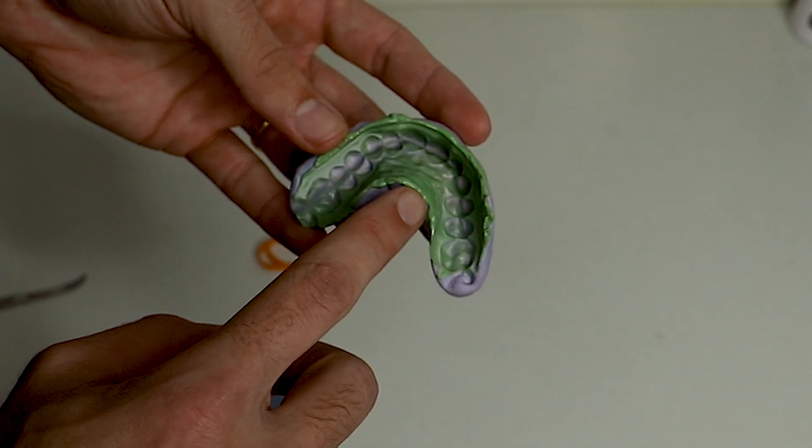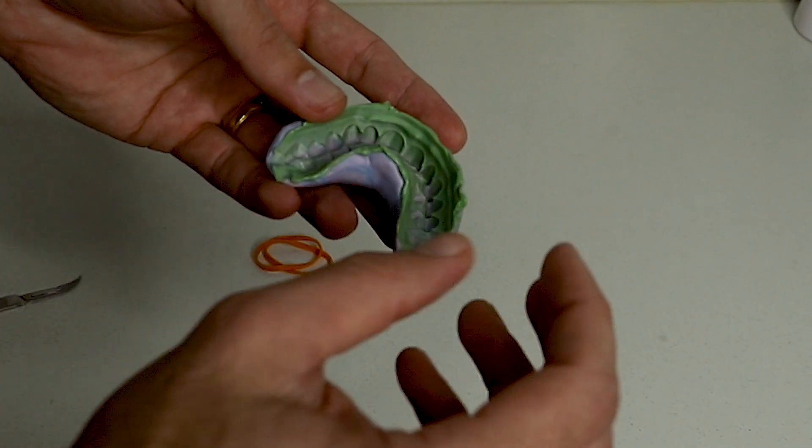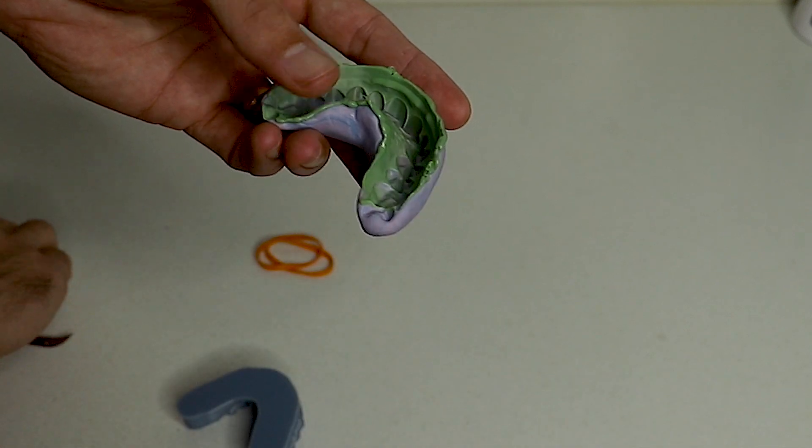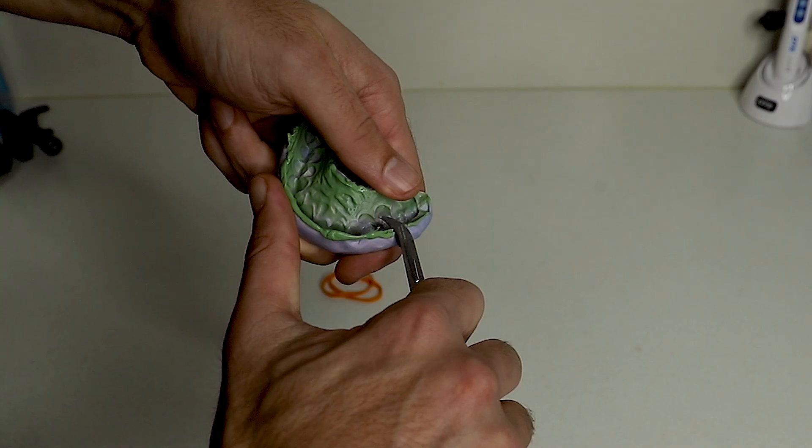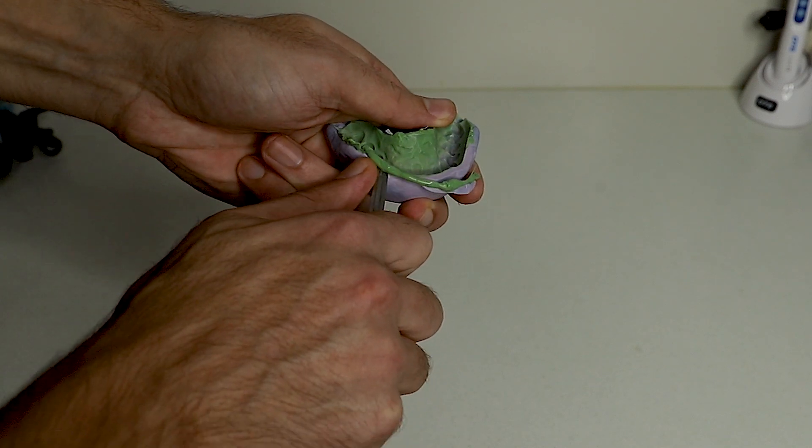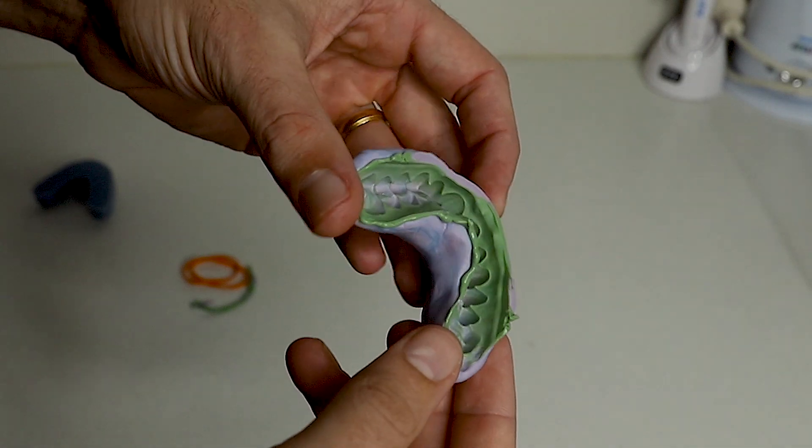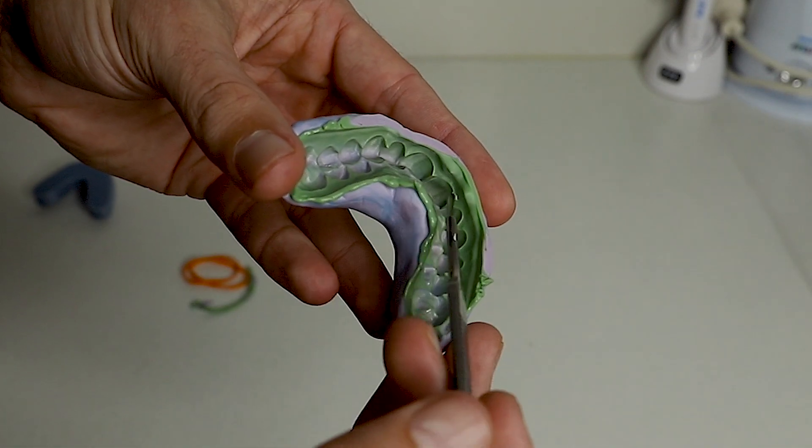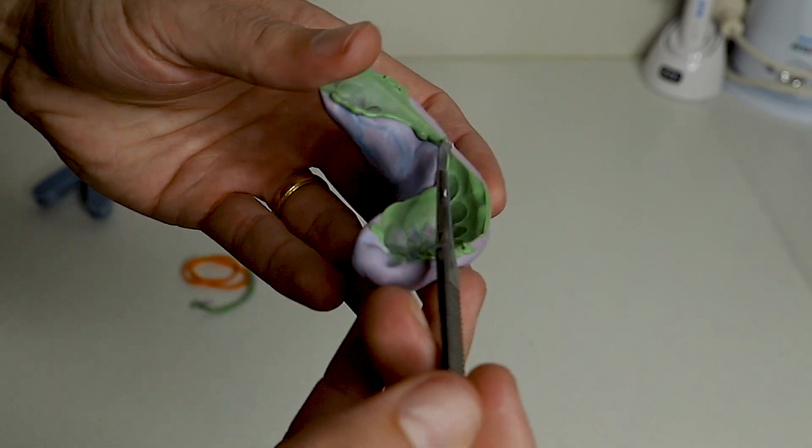Make sure as well that you do leave the light body in long enough. If you take it out too early it will be more likely to detach and obviously that's not what we want. So we're going to trim away the excess light body first. Now the next little bit.